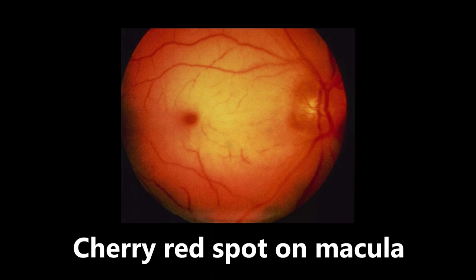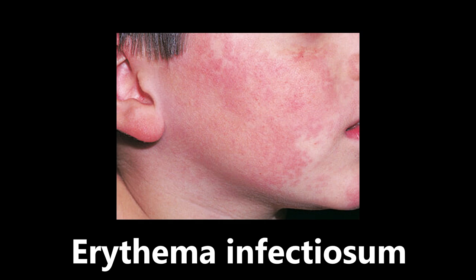This next picture is a facial rash, and the association that we need to know here is that this is erythema infectiosum, also known as fifth disease. This is a viral infection caused by parvovirus B19, and it causes that classic slapped cheek rash, notably in children. If you see this on the exam, you want to be thinking erythema infectiosum, aka fifth disease, caused by parvovirus B19.